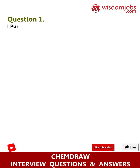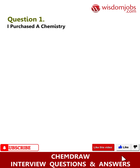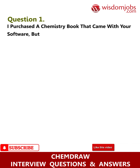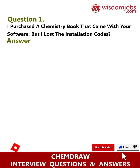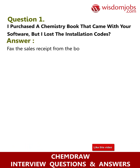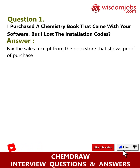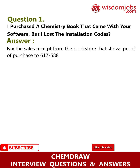Question 1: I purchased a chemistry book that came with your software, but I lost the installation codes. Answer: Fax the sales receipt from the bookstore that shows proof of purchase to 617-588-9300.